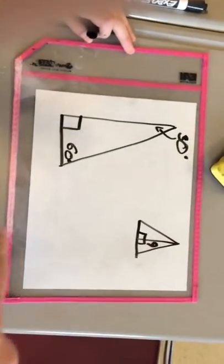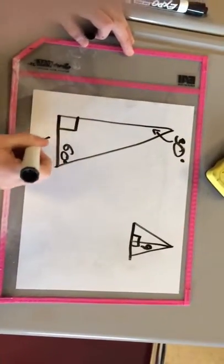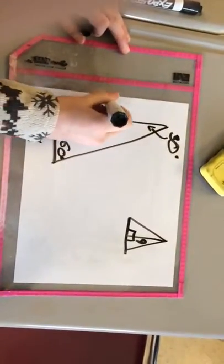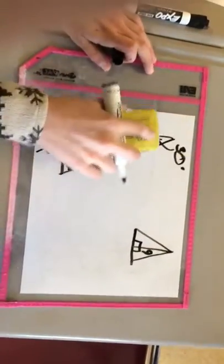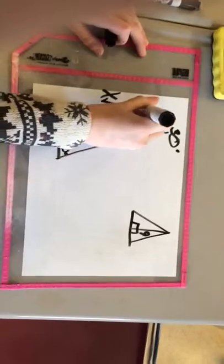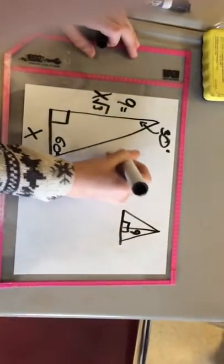So we know that the bottom is X and then the left side is 9. And then on the right it would be 2X.